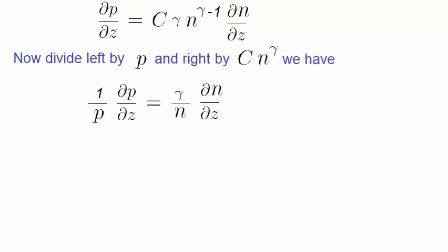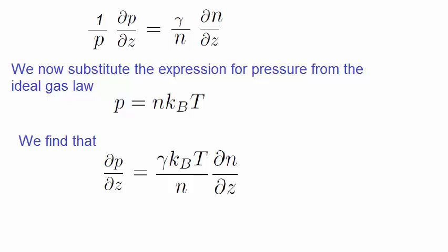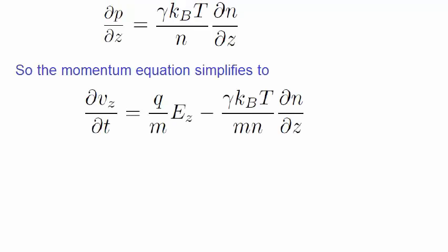We now substitute the expression for pressure from the ideal gas law, p equals nkt. We find that dp dz becomes this expression. So now, we substitute this back into the momentum equation, which results in this equation.